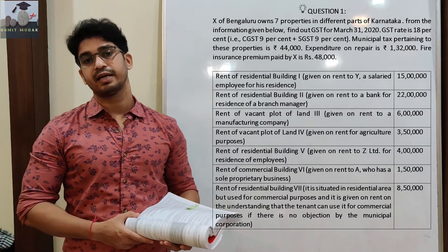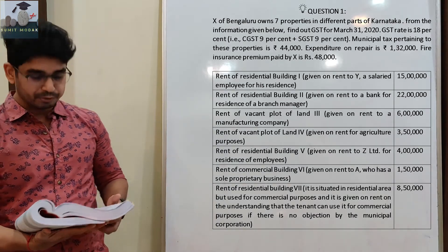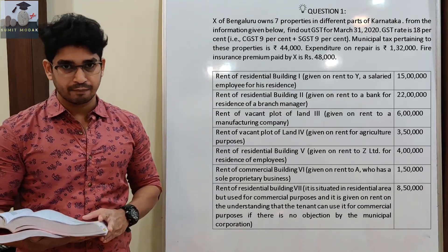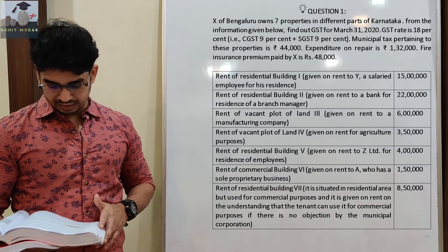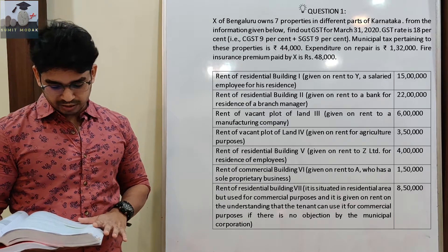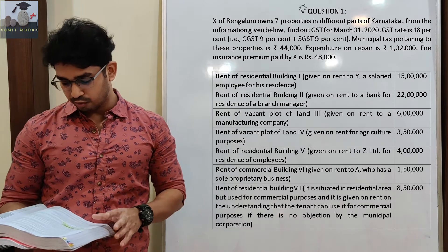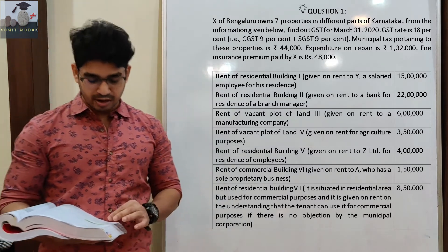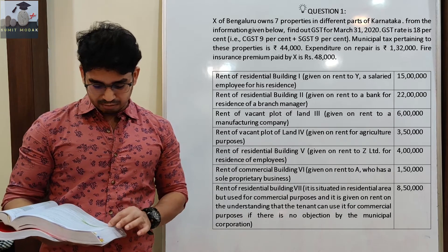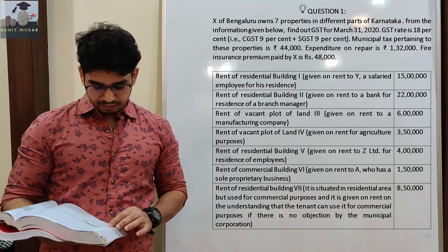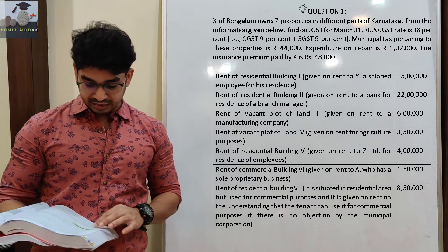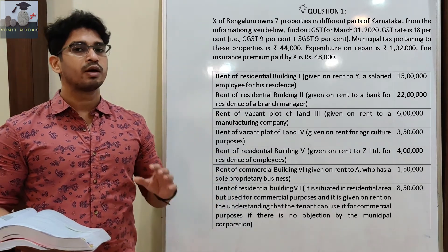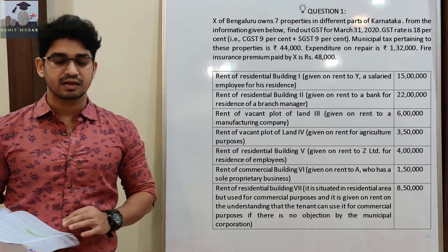Now let us determine the taxable properties. Plot of land is property number 3, plot of vacant land is number 4, residential building is number 5, commercial building is number 6, and residential building is number 7. All 7 properties are used for the purpose of earning money and we need to charge GST on the applicable ones.